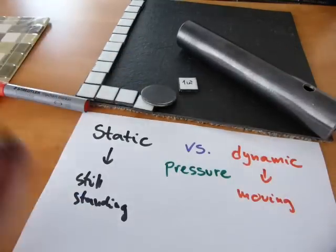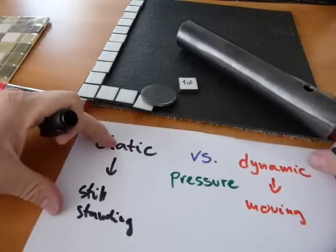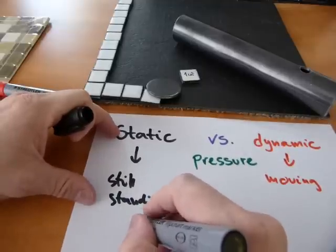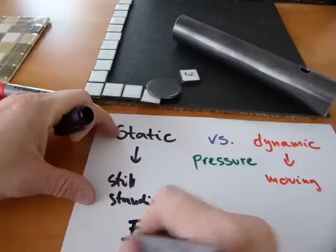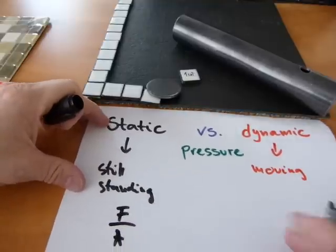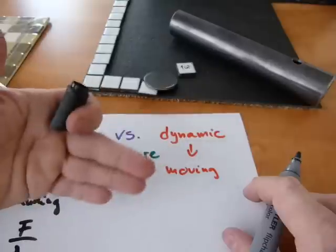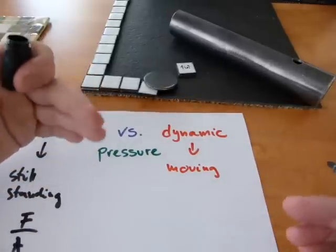Static pressure is calculated with how we looked at PSI and MPa. It's a force divided by the surface area over which that force is exerted.